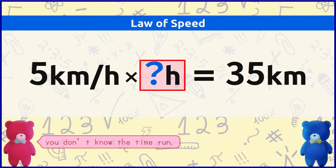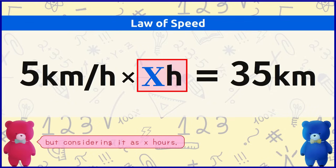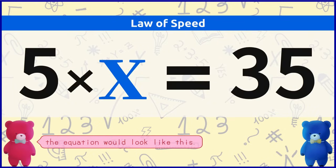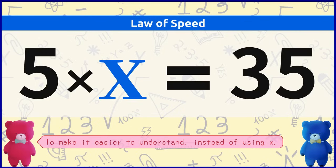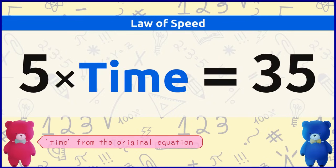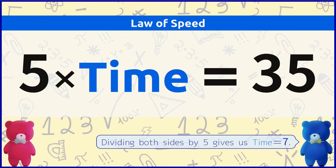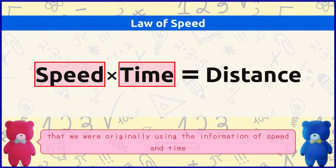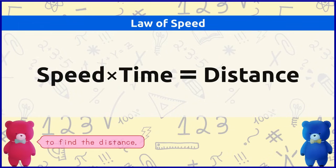You don't know the time run, but considering it as X hours — meaning viewing it as a variable — the equation would look like this. To make it easier to understand, instead of using X, we could use the word 'time' from the original equation. Dividing both sides by 5 gives time equals 7.